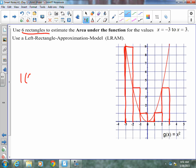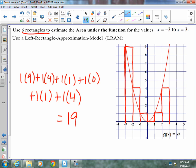Our fifth rectangle, our sixth rectangle. So we get one times nine, plus one times four, plus one times one, plus one times zero, plus one times one, plus one times four, which works out to be an area of 19. And that's an estimation, obviously, because we are overestimating some in these portions, but we are underestimating these portions. So hopefully it would balance out.